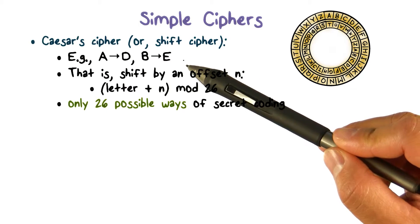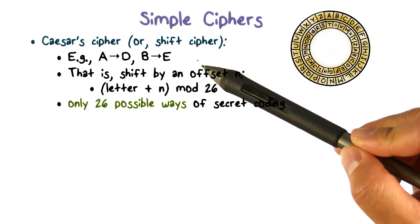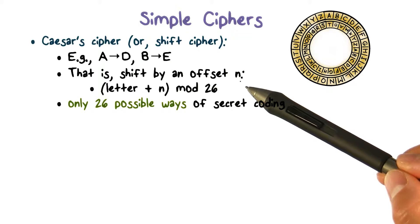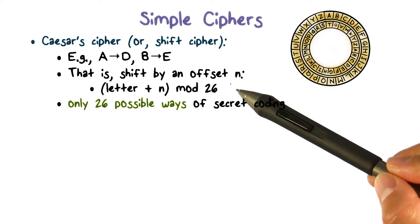Caesar cipher is also called shift cipher because each letter is mapped to another letter by a fixed amount of shift. So if we represent letters as numbers, meaning A is 1, B is 2, and Z is 26.